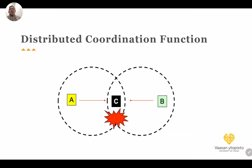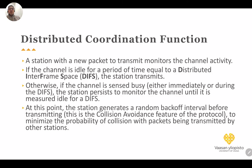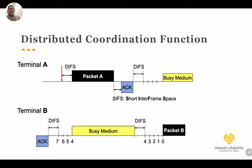If terminal A wants to communicate with another terminal, they will wait for a short time called the Distributed Interframe Space (DIFS). They listen during that time and then start sending packet A. In the DCF there is no Clear to Send command — they simply sense the channel, and if there is no transmission during the DIFS time they start to send the packet.